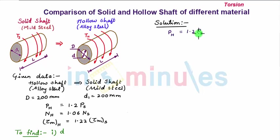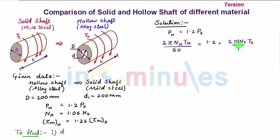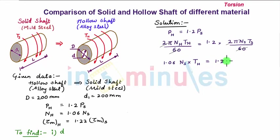Substituting the power formula: (2π N_H T_H)/60 = 1.2 × (2π N_S T_S)/60. The 2π/60 terms cancel. Substituting N_H = 1.06 N_S gives 1.06 N_S × T_H = 1.2 N_S × T_S. N_S cancels, giving T_H = (1.2/1.06) × T_S = 1.13 T_S. This is Equation 1.